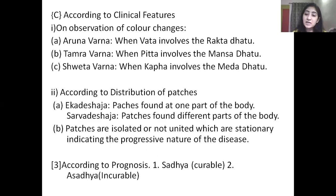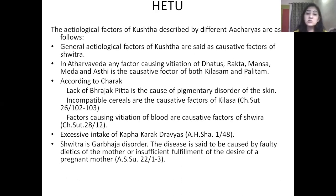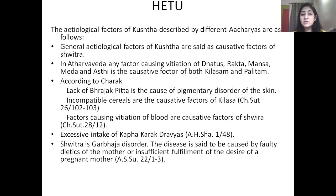Another classification can be done according to prognosis of the disease, that is Sadhyam or curable and Asadhyam or incurable. So, these were all the detailed classifications of Shwitra Roga. Now coming towards Karan, that is etiological factors. Etiological factors of Kushtha Roga described by different Acharyas are as follows. In other words, general factors are said as causative factors of Shwitra also. In Atharvaveda, any factors causing recession of Dhatu, Rakt, Maan, Medha and Asthi are the causative factors for both Shwitra and Palitam.